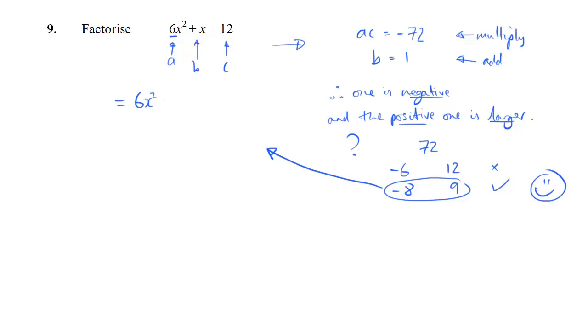So 6x squared, I'll write that out again, but instead of plus x, I have plus 9x minus 8x. I'm using these two values, and I still have the minus 12 on the end.